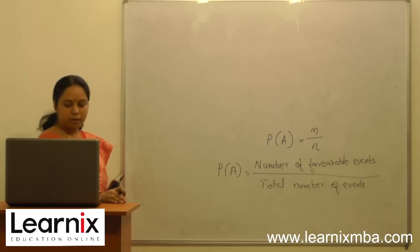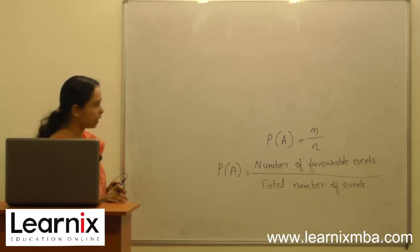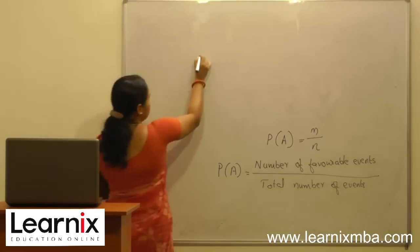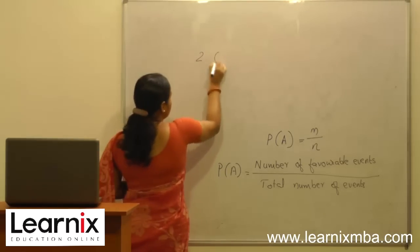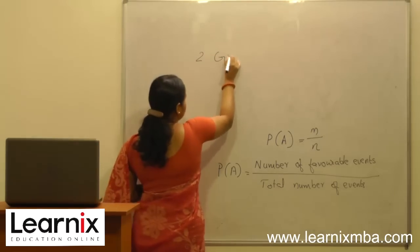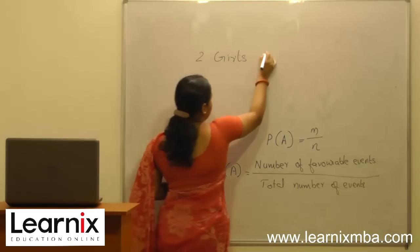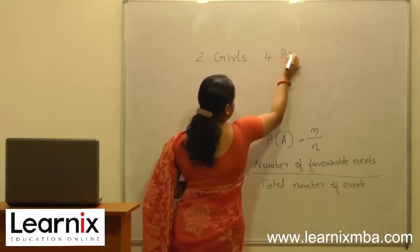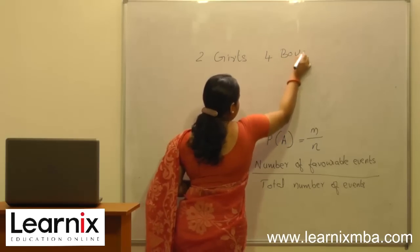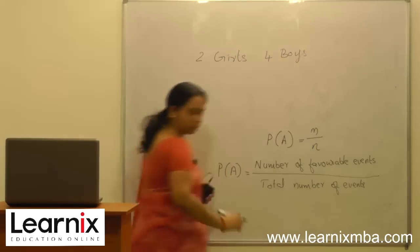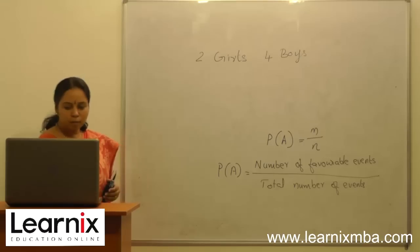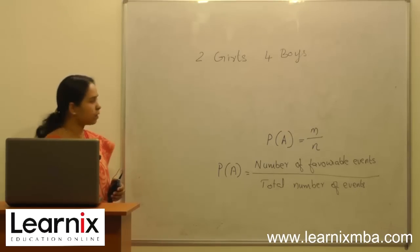For example, consider a class containing two girls and four boys. What is the probability of selecting a girl from the class?